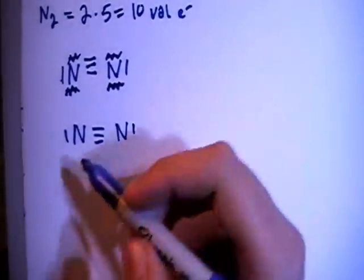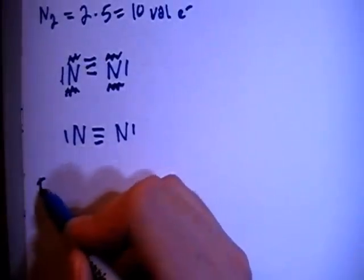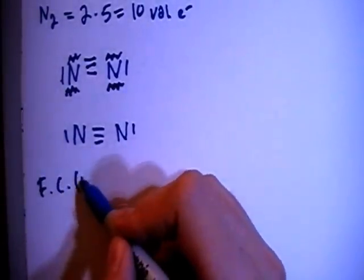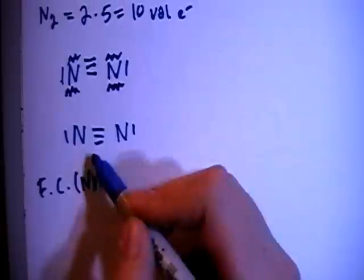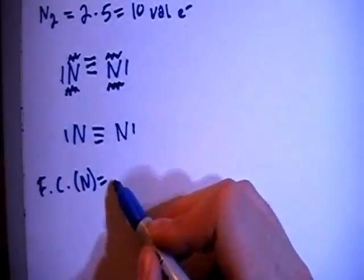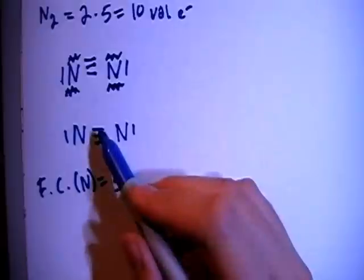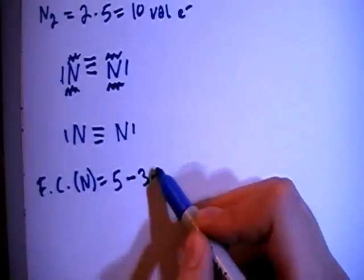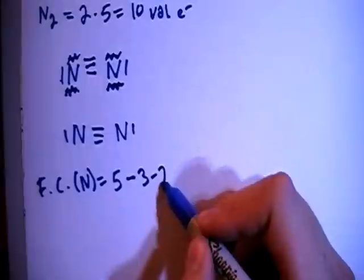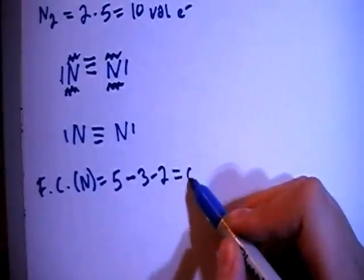Okay, so now let's go ahead and check the formal charge real quick. The formal charge of the nitrogen for both, since they both have the same setup, it's going to end up being five valence brought in, minus three bonds, minus two non-bonding electrons for a formal charge of zero.